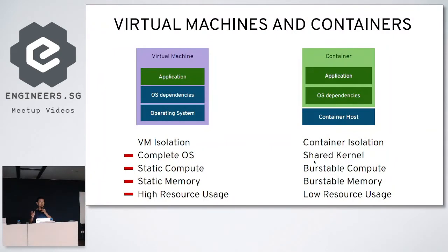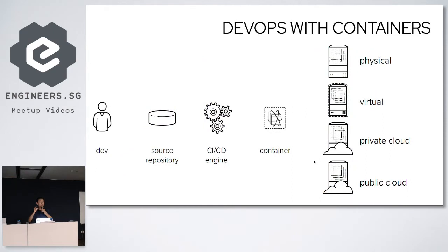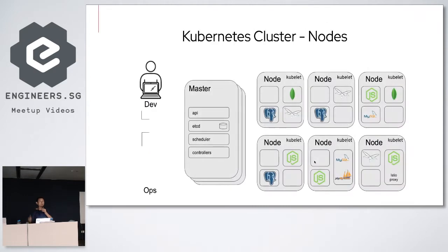Everybody knows containers have a lot of advantages compared to virtual machines. DevOps has sped up the adoption of containers literally everywhere. One big advantage is you build once, run anywhere — public cloud, private, virtual machine, physical machine, etc. The problem is when you only have thousands of containers you can still manage them, but when you launch hundreds of thousands of containers it becomes a problem. That's where Kubernetes comes into play. A typical Kubernetes cluster has control plane nodes and multiple worker nodes.